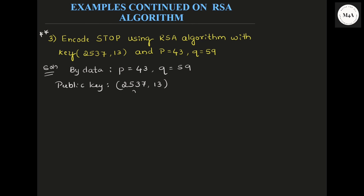If it is a public key, it implies N comma E, so N is 2537 and E is 13. Private key is (D, E). Now, once you have P and Q, the next step according to RSA algorithm is to find N. N is P into Q, that is 43 into 59, and when you multiply this you get 2537.